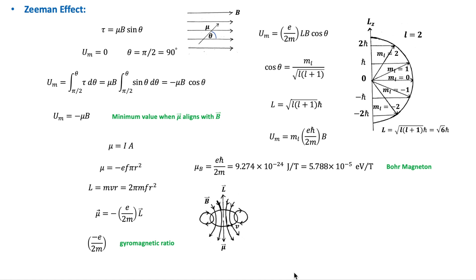Now let's consider what happens to an atom placed in a magnetic field. From electromagnetism, the magnitude of the torque tau on a magnetic dipole mu placed in a magnetic field of flux density B is equal to mu·B·sine(theta), where theta is the angle between the vectors mu and B. The torque has a maximum when the dipole moment is perpendicular to the field (theta = 90°), and is zero when the dipole is parallel or anti-parallel to B.